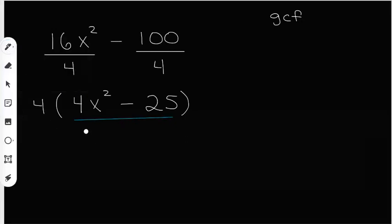So what's the square root of 4? That's going to be 2. What's the square root of x squared? That's going to be x. And then what's the square root of 25? That's going to be 5.